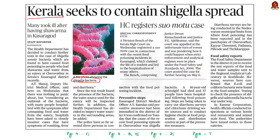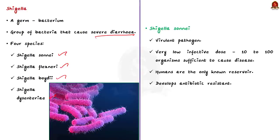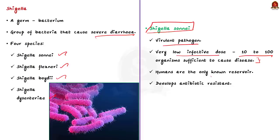Shigella is a germ that includes a group of bacteria causing severe diarrhea. This group has four species: Shigella sonnei, Shigella flexneri, Shigella boydii, and Shigella dysenteriae. We will focus on Shigella sonnei because the food poisoning episodes in Kerala were caused by this bacteria. Shigella sonnei is a virulent pathogen with a very low infective dose — only approximately 10 to 100 organisms is enough to cause disease. Humans are the only known reservoir of this bacteria, and it develops antibiotic resistance.